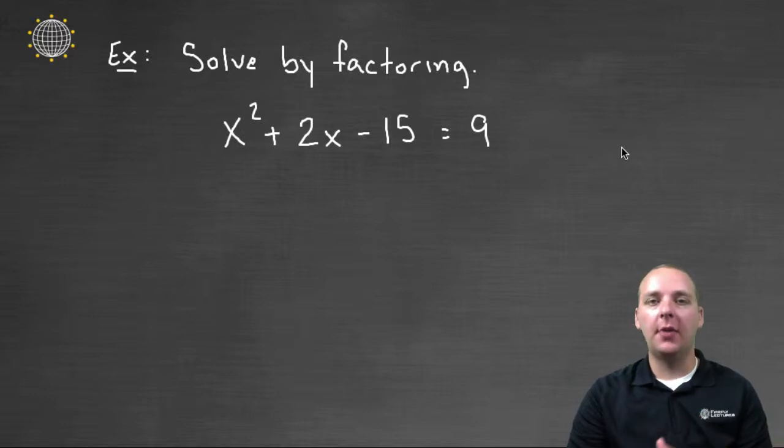In this example we're being asked to solve the quadratic equation x squared plus 2x minus 15 equals 9, and to solve it by factoring. Now one of the most important things I see right off the bat is the fact that this is not set equal to zero.